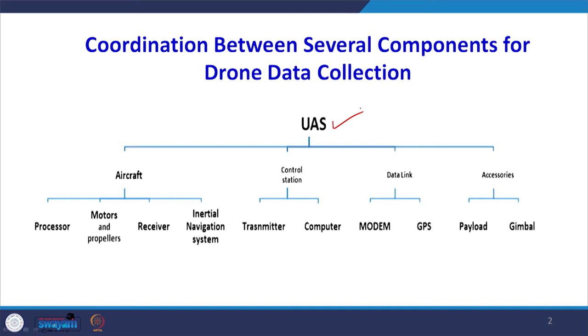If we look at the entire system, what we call the unmanned aerial system — the short form is UAS — this system has a UAV aircraft on one hand, but also control systems on the ground with a transmitter and a computer attached to it. Then we have a data link system, communication system, and certain accessories. This entire thing makes up the UAS, so we require a good efficient UAS system to fly, collect data, and carry out meaningful analysis.